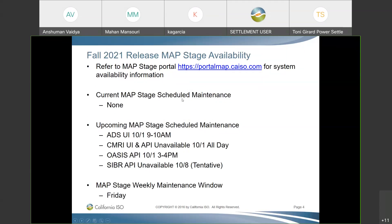To get up-to-date information about MAP stability, you can log into portalmap.caiso.com. Currently, we have the following upcoming MAP stage scheduled maintenance: ADS UI maintenance tomorrow from 9 a.m. to 10 a.m.; EMRI UI and API will be unavailable tomorrow all day; OMS or OSS API maintenance from 3 p.m. to 4 p.m. tomorrow; and tentative CAPER API unavailability on October 8 at 10 a.m.